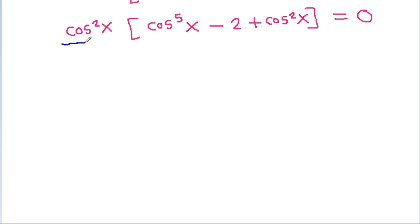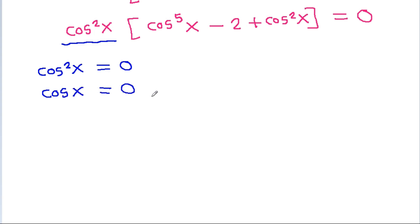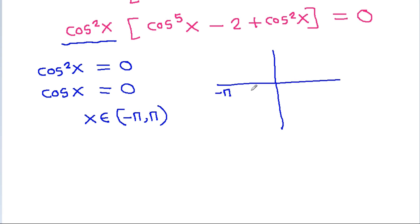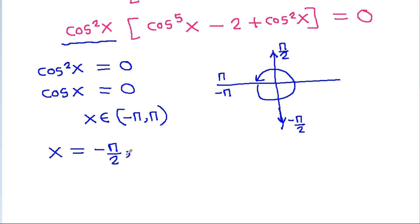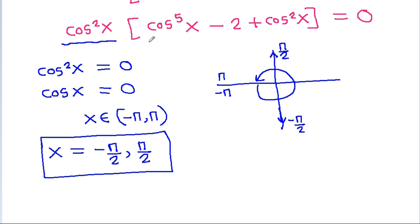So either cos²x equals 0, which means cos x equals 0. From minus pi to pi, cos x equals 0 at x equals minus pi by 2 and at x equals pi by 2. So x equals minus pi by 2 and pi by 2. Or, cos⁵x minus 2 plus cos²x equals 0.